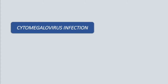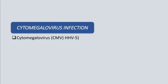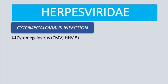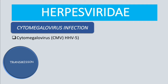In this video we are going to talk about cytomegalovirus (CMV) infection. CMV is also known as human herpesvirus 5 (HHV-5). 'Megalo' means large, so cytomegalovirus is the largest virus in the Herpesviridae family. CMV is transmitted in the following ways: blood transfusions,